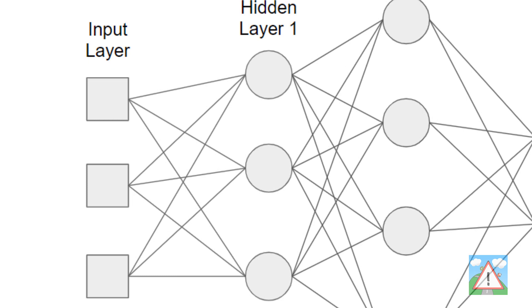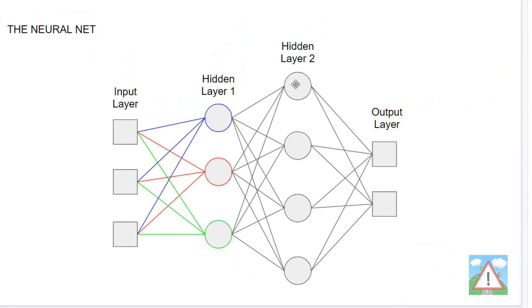The way these connections through the network work — you can see with the colorization here — the blue node in hidden layer one is connected to each of the nodes in the input layer, as is the red node and the green node. And in hidden layer two, each node is connected to each of the nodes in hidden layer one. In the output layer, each node is connected to each of the four nodes in hidden layer two. So this is what a neural network looks like: some inputs, some hidden layers all interconnected, and some outputs.